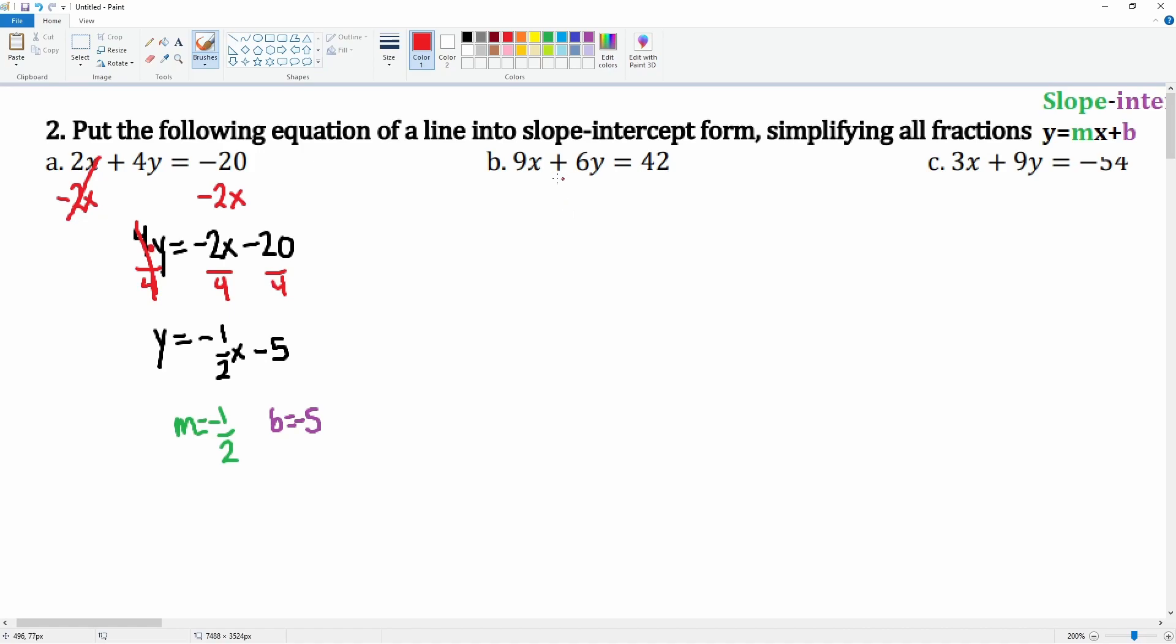9x plus 6y equals 42. Subtract 9x to both sides. 9x minus 9x will cancel, leaving you with just 6y equal to negative 9x plus 42. There's a 6 in front attached via multiplication, so we're going to divide 6 to each term. This does cancel, leaving you with just y equals to negative...